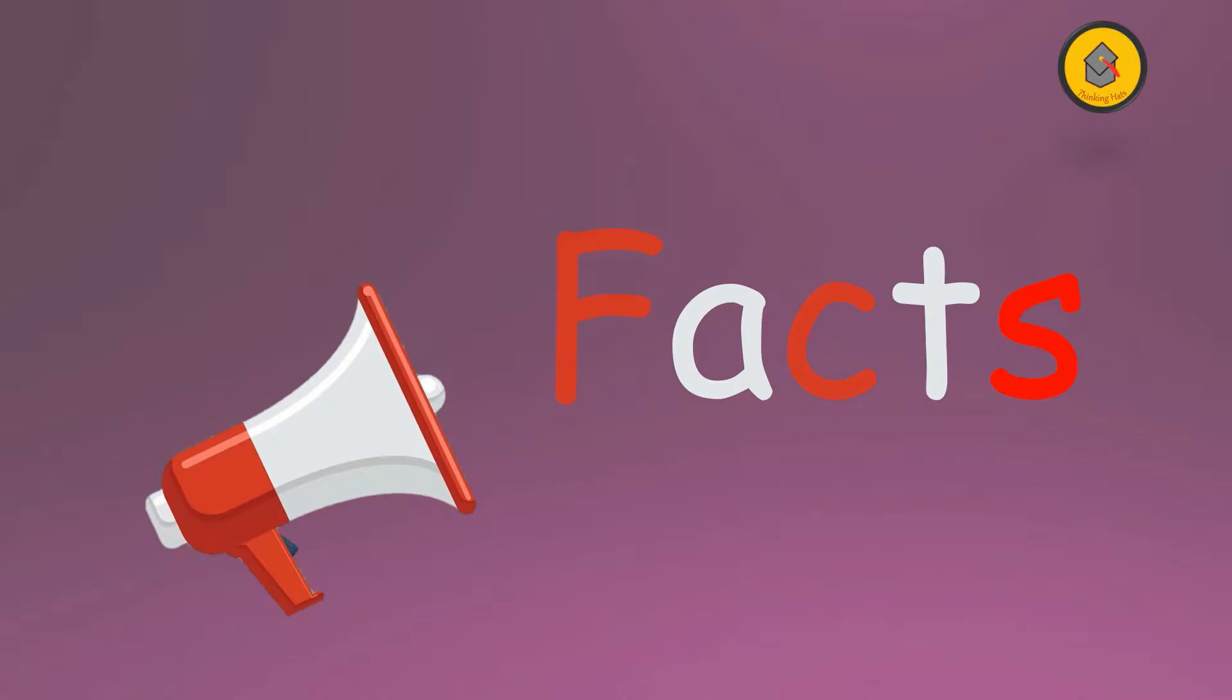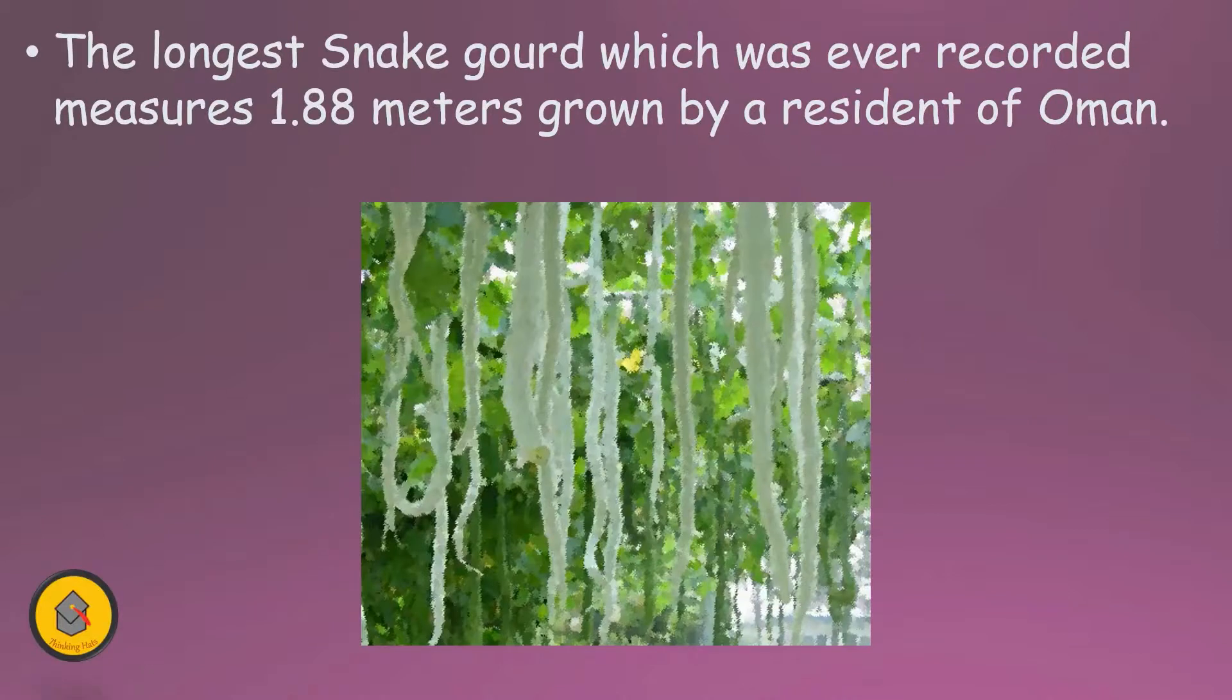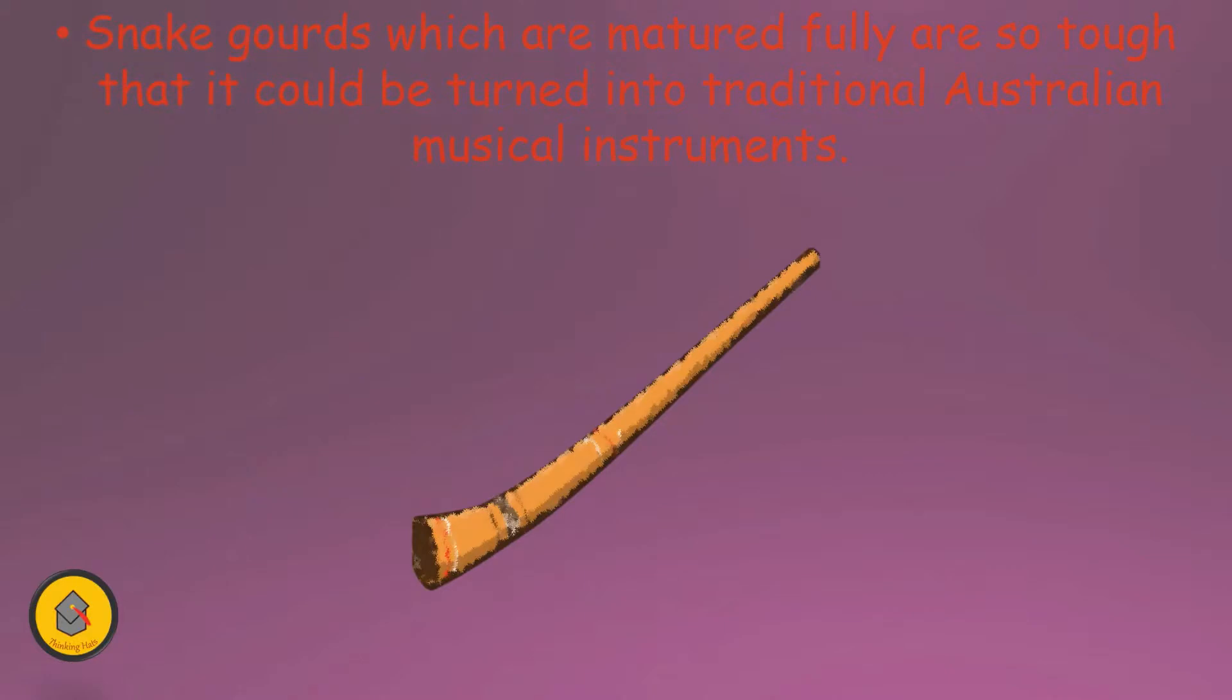Now that we are done sorting out the myth and knowing the real reason behind it, let us know a few facts about the snake gourd and the egg. The longest snake gourd which has ever been recorded measures 1.88 meters, grown by a resident in Oman. The snake gourds which are fully mature are so tough that they can be turned into traditional Australian musical instruments.